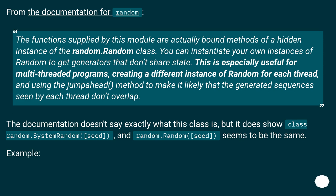The documentation doesn't say exactly what this class is, but it does show class random.SystemRandom and random.random with seed, which seem to be the same. Example.